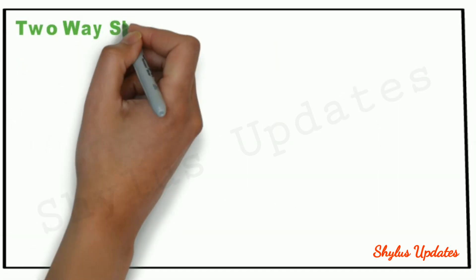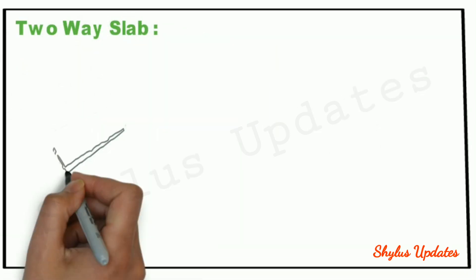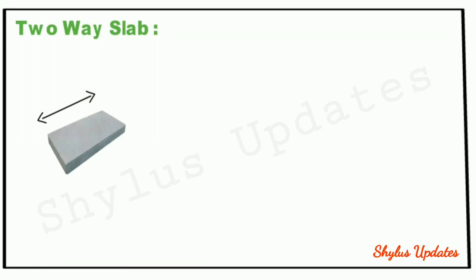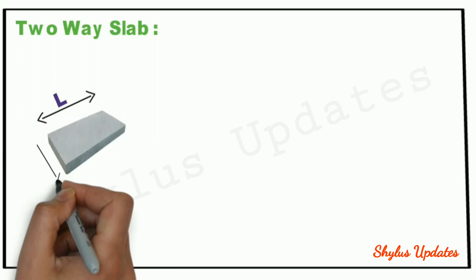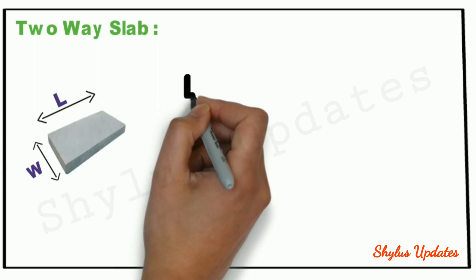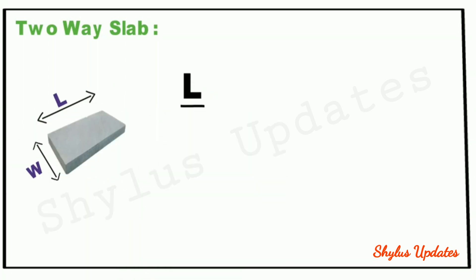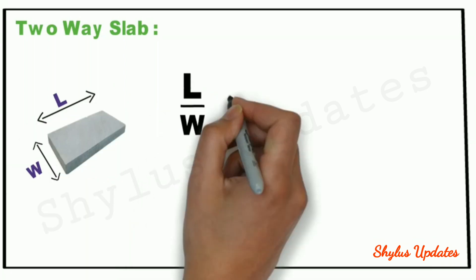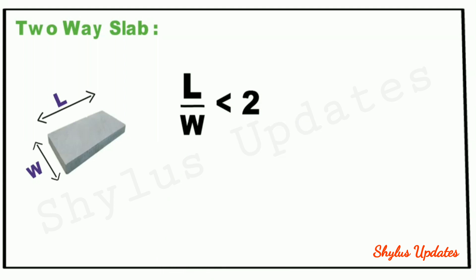2-way slab: The ratio of longer span to shorter span should be less than 2. That is, L divided by W should be less than 2.